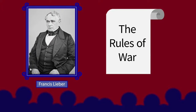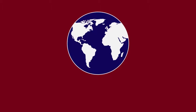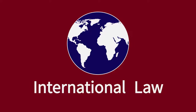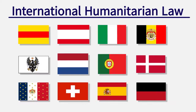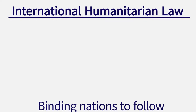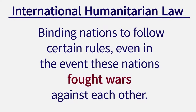From the very beginning of IHL, it was developed and intended to be international law — that is, law that would apply in interactions between nations. The result was the original Geneva Convention in 1864, the first document to establish true international humanitarian law. With 12 European nations signing the convention, it became the first international agreement binding nations to follow certain rules, even in the event these nations fought wars against each other.